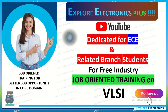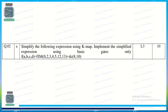Welcome back to Explore Electronics. In this video, let's solve a question on K-map with max terms. Simplify the following expression using K-map and implement the simplified expression using basic gates only. The function F(A, B, C, D) = πM(0, 2, 3, 4, 5, 12, 13) + DC(8, 10). Here πM indicates the values given are max terms, and DC indicates 8 and 10 are don't care terms.